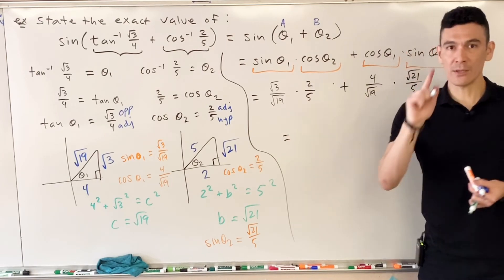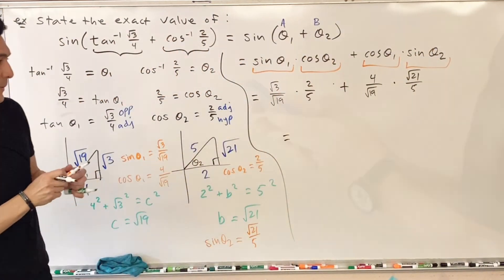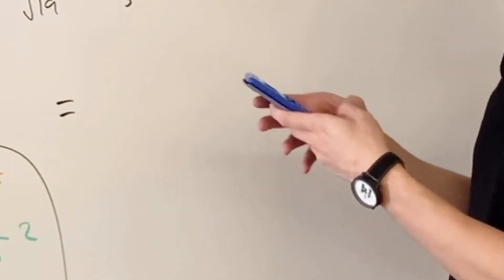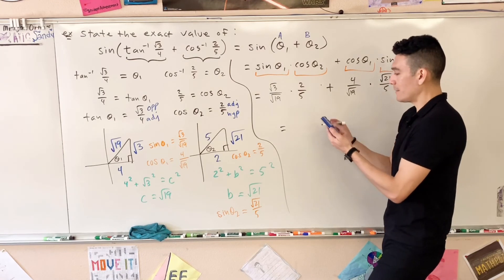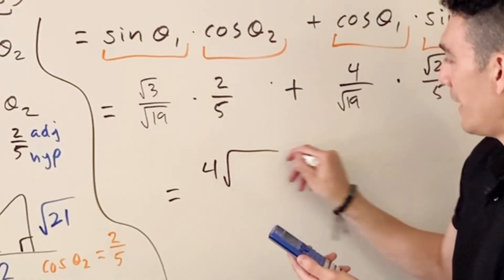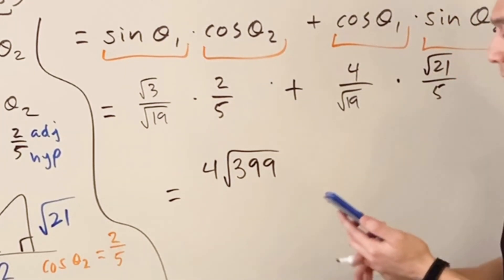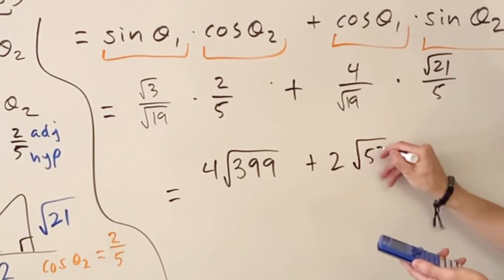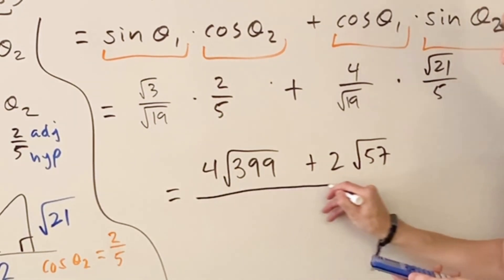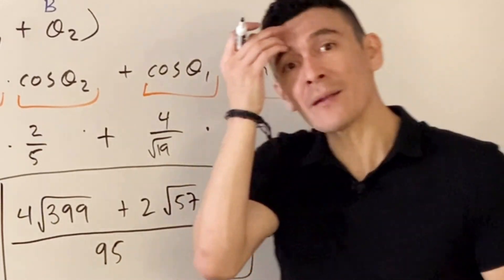And this folks is when you go straight to your devices and you type all of that in. So I typed this in and I got the craziest answer that you've ever seen: I got 4 times that plus 2 times this, all of this gibberish sitting on top of 95. That is a lot of math that just took place.